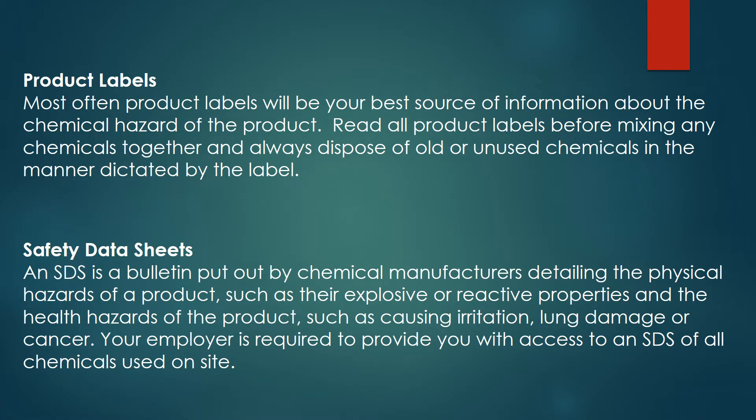Most often, product labels will be your best source of information about the chemical hazard of the product. Read all product labels before mixing any chemicals together, and always dispose of old or unused chemicals in the manner dictated by the label. An SDS is a bulletin put out by a chemical manufacturer detailing the physical hazards of a product, such as their explosive or reactive properties, and the health hazards, such as causing irritation, lung damage, or cancer. Your employer is required to provide you with access to an SDS of all chemicals used on site.